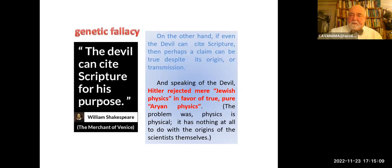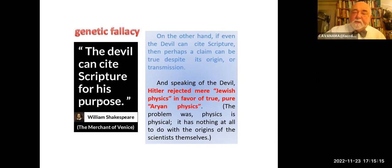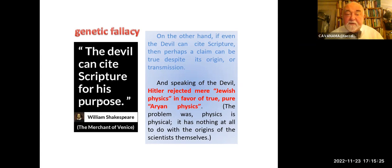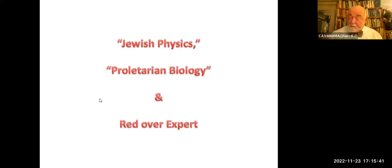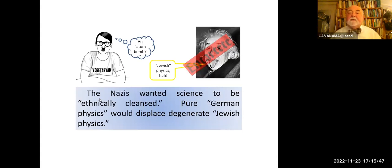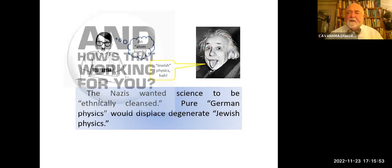And speaking of the devil, Hitler himself rejected what he called Jewish physics in favor of true pure Aryan physics in exactly the same manner. The problem was physics was physics — it had nothing to do with the origins of the scientists themselves. And what happened, of course, is that Jewish physicists and others went over to work for the Allies. But Hitler got his pure — just pure — Aryan physics. Jewish physics, proletarian biology, and red over expert: the Nazis wanted science to be ethnically cleansed; pure German physics would displace Jewish physics.